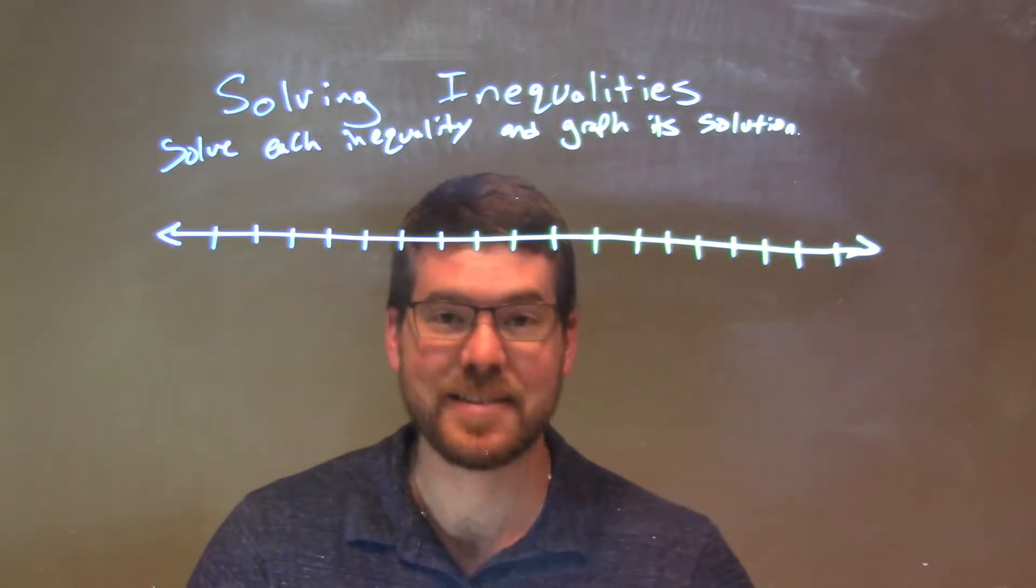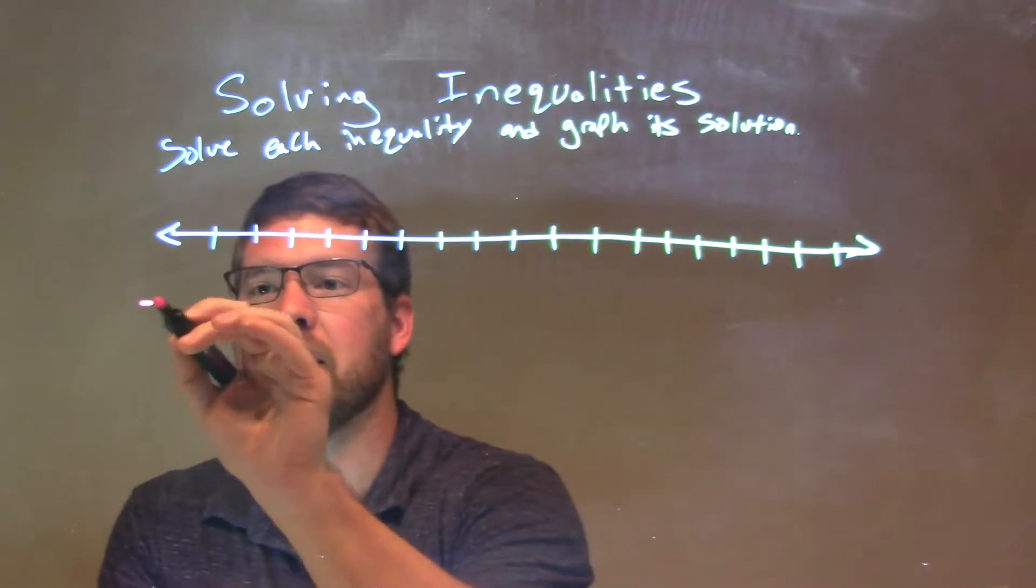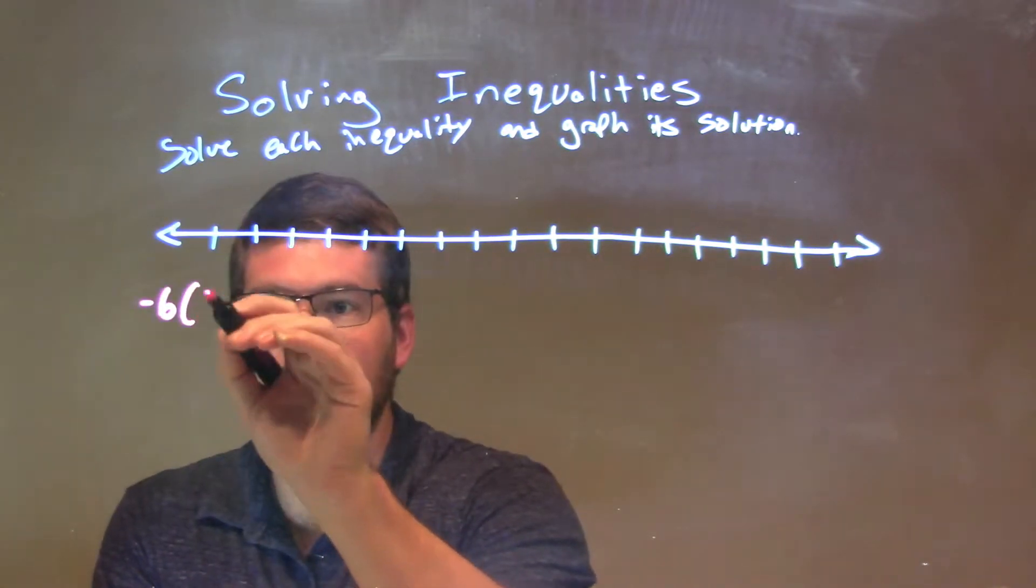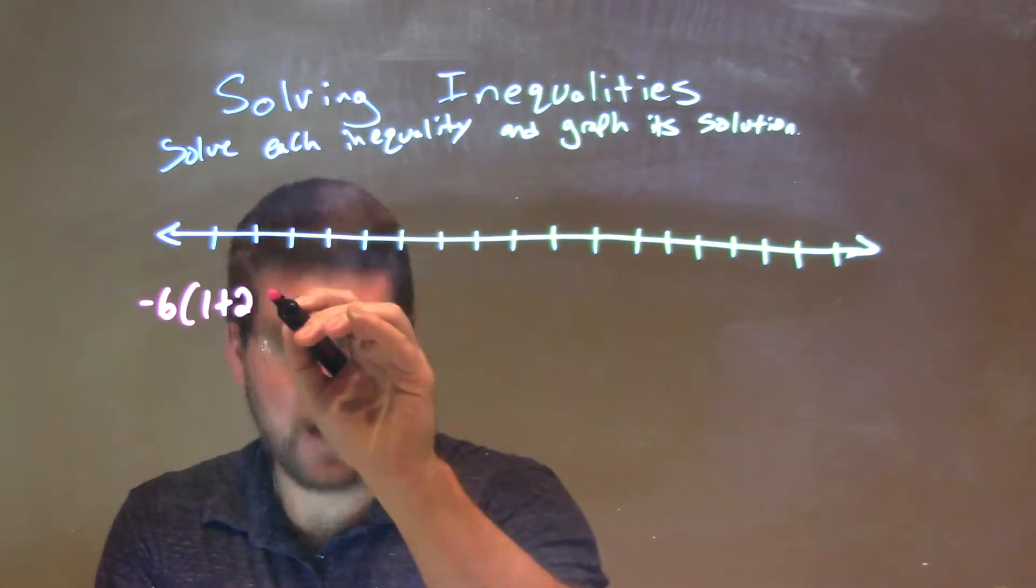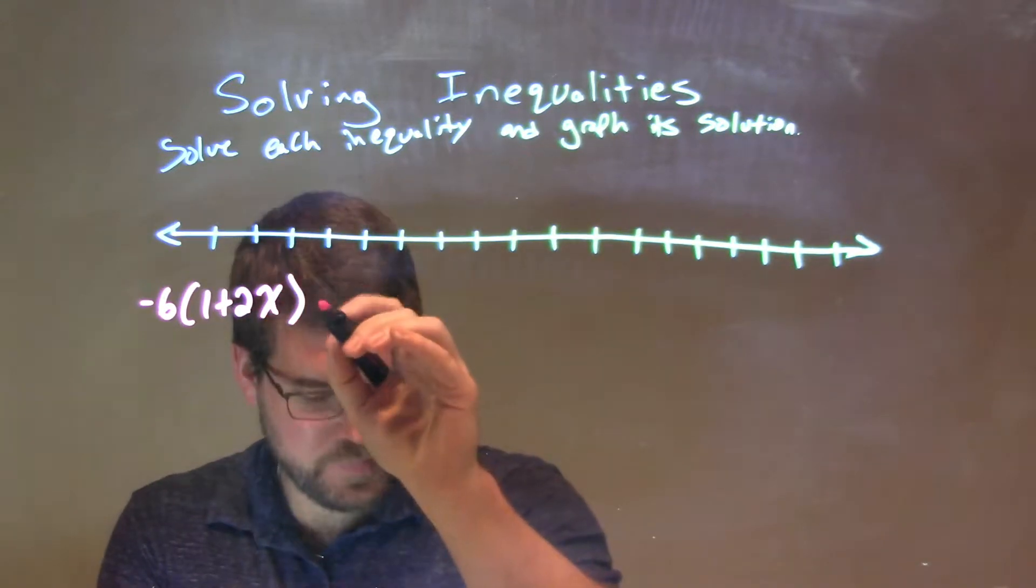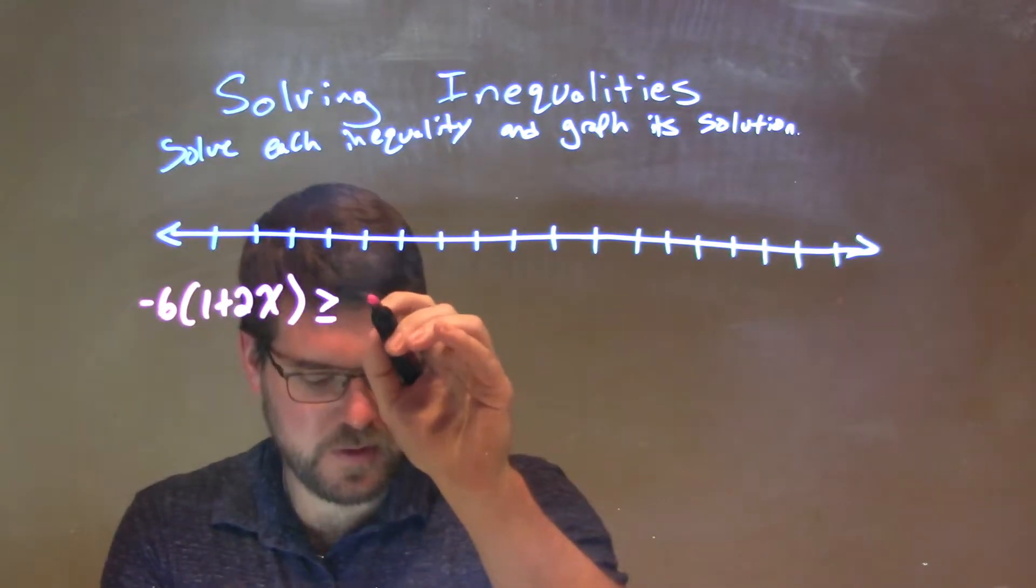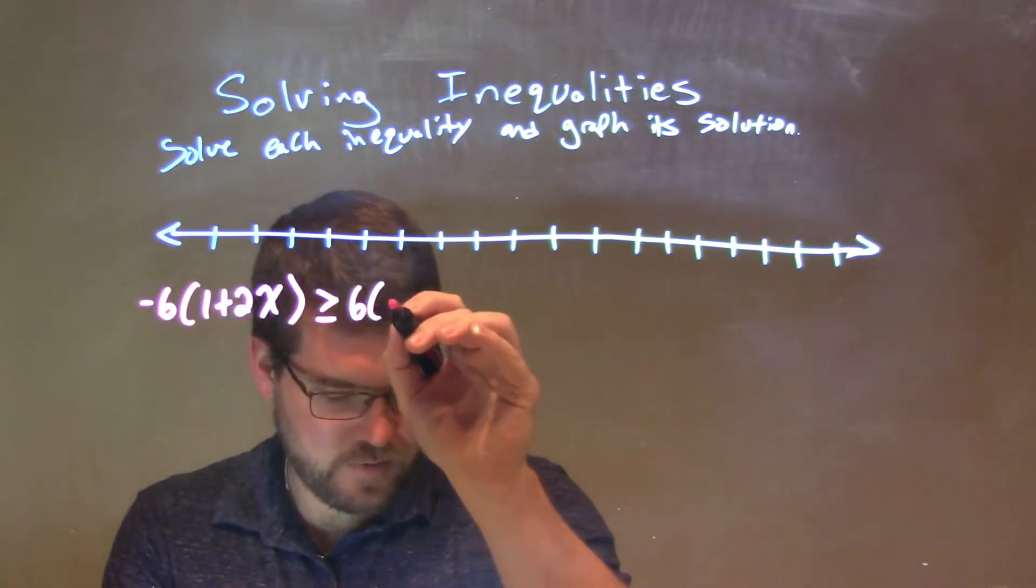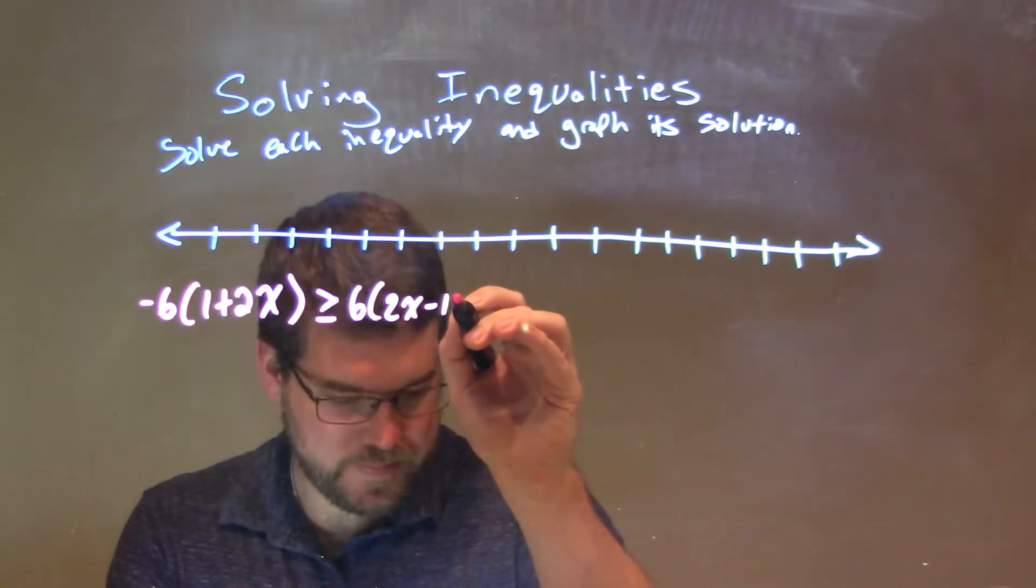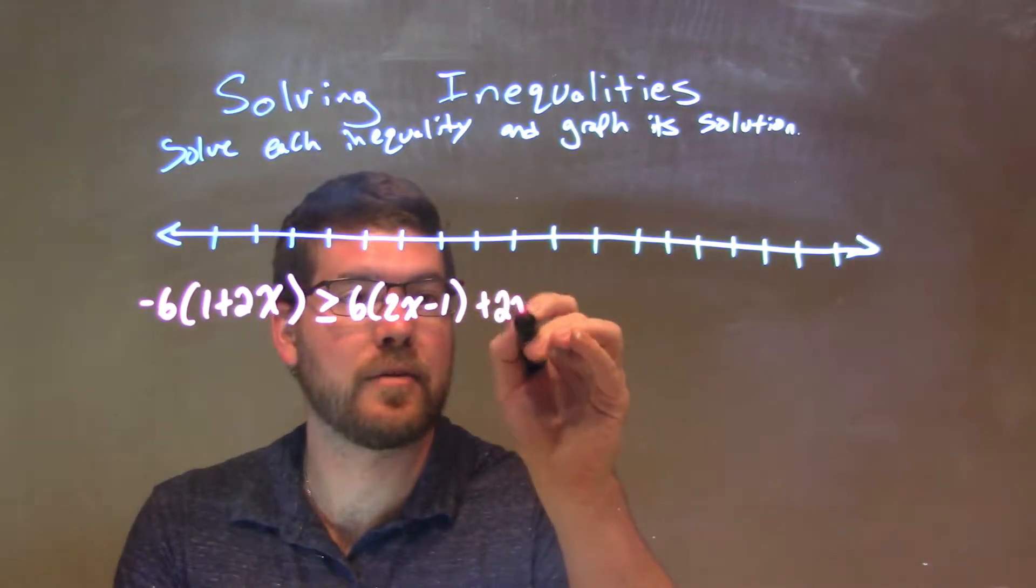So, if I was given this inequality, negative 6 times 1 plus 2x is greater than or equal to 6 times 2x minus 1 plus 2x.